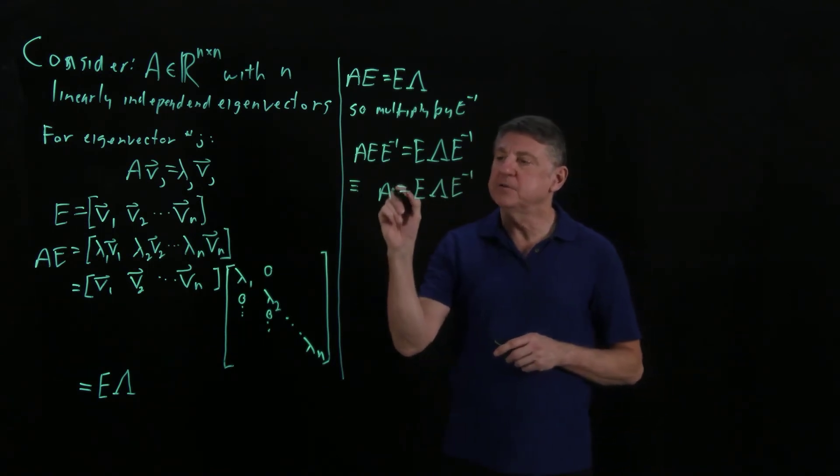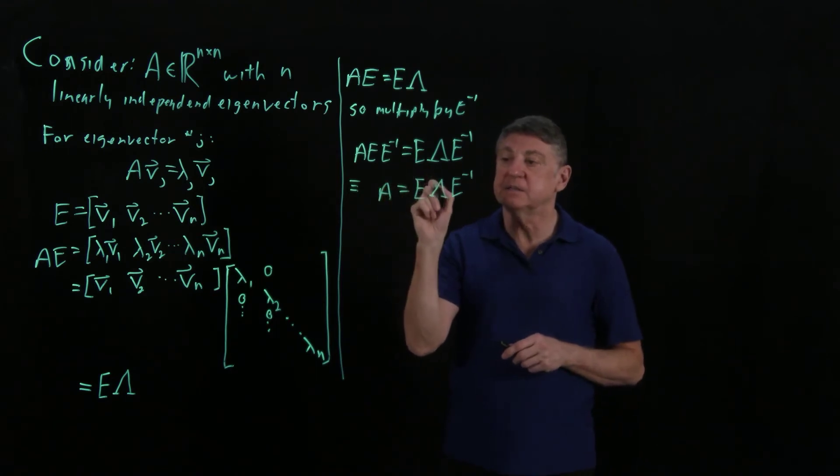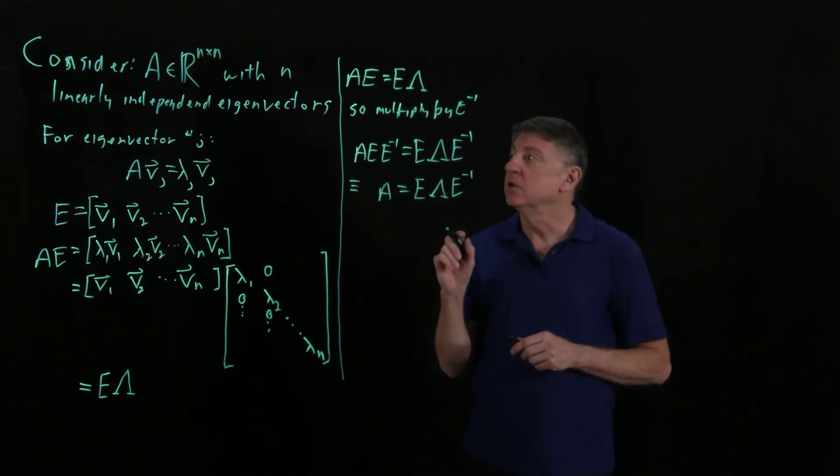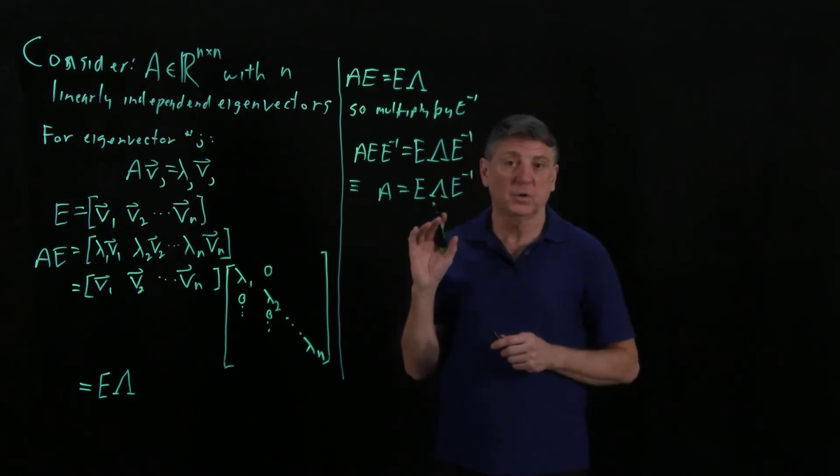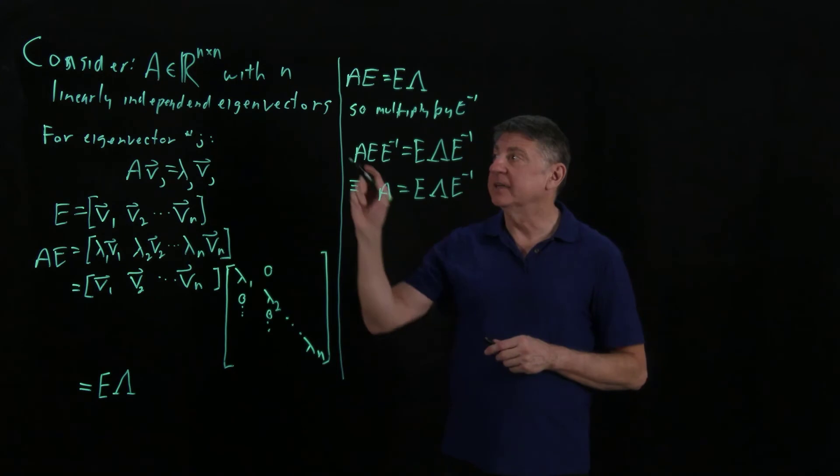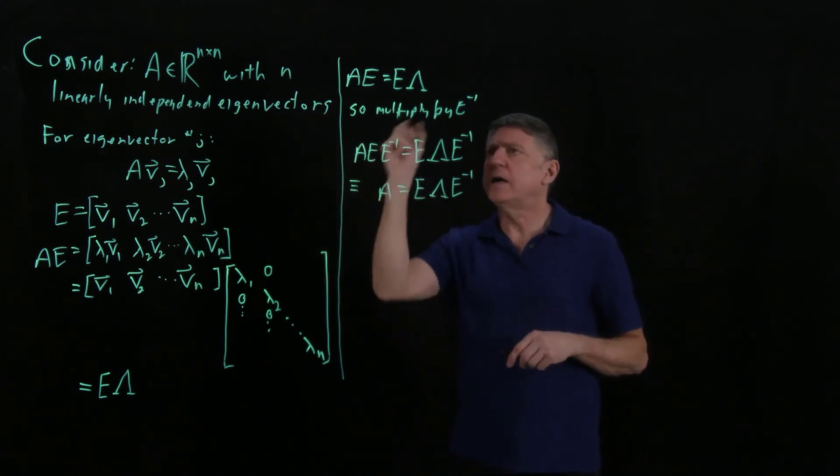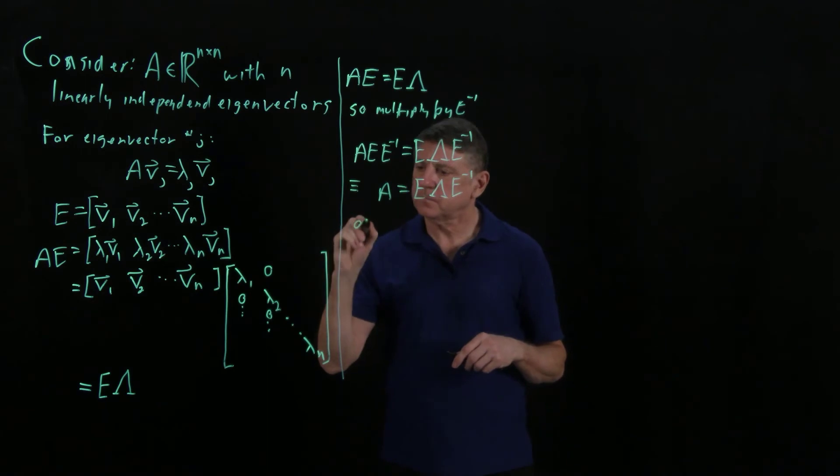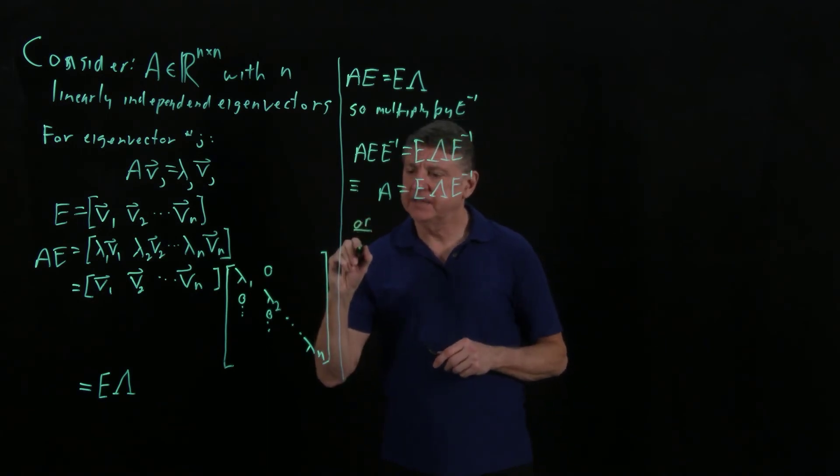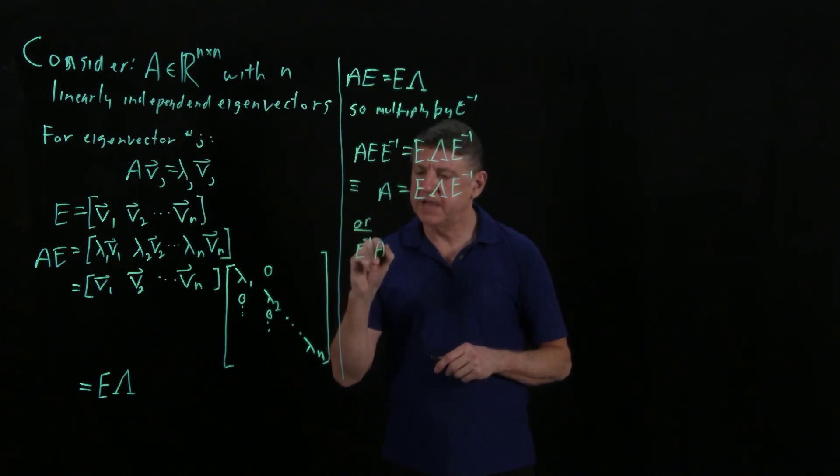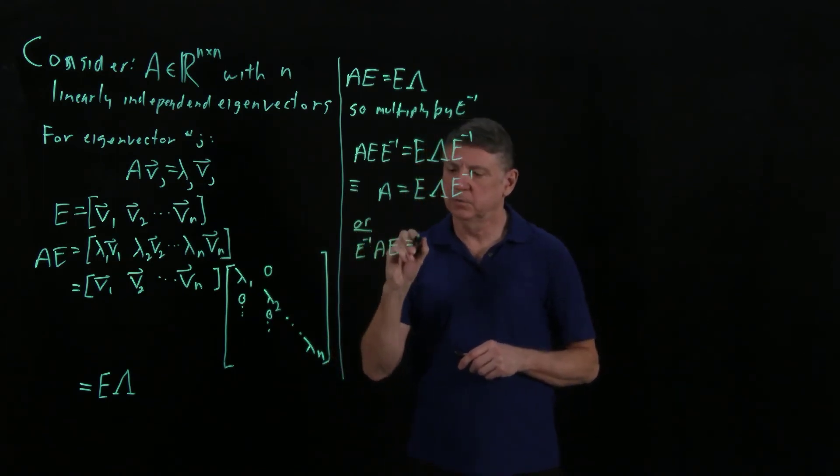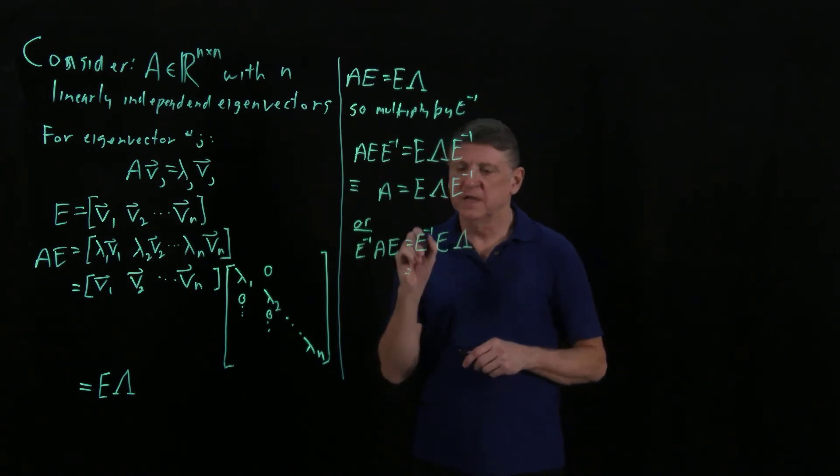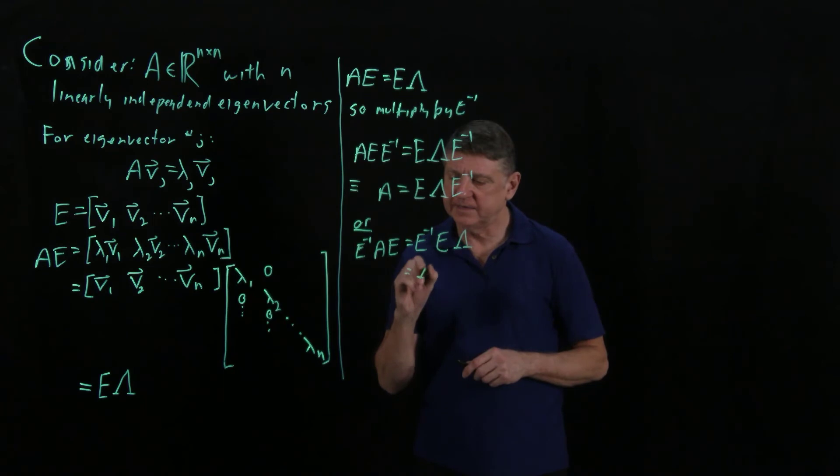And when a matrix... So that means that the matrix A is similar to a diagonal matrix. Now, I said that we would post-multiply first. What happens when we pre-multiply? Well, we could say that E inverse times A times E equals E inverse times E times lambda. E inverse E is the identity, so that is lambda. So this gives us a way... This says that A is similar to a diagonal matrix, and this equation gives us a way to transform A to its diagonal matrix.